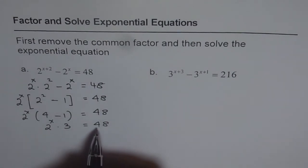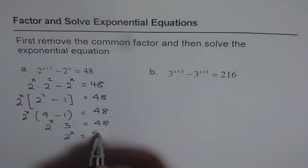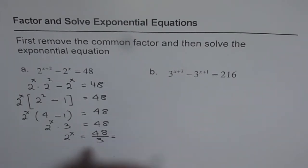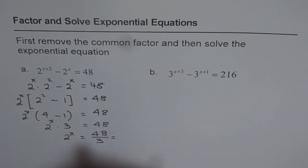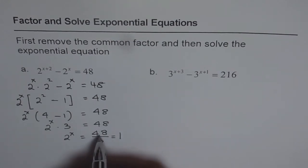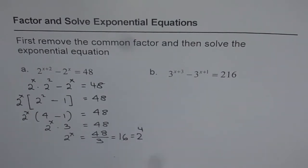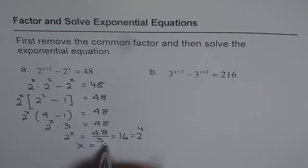So you can divide this by 3. So you get 2 to the power of x equals to 48 divided by 3, and that gives us 16, which equals 2 to the power of 4. And that gives us our solution that x is equal to 4.